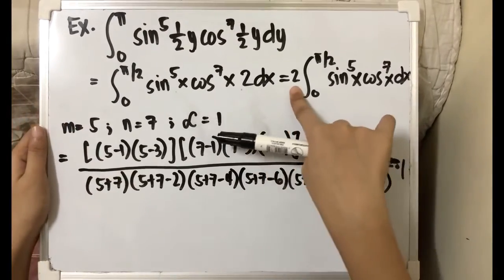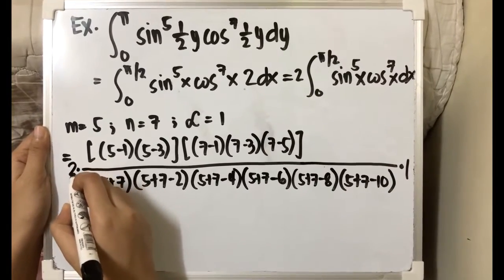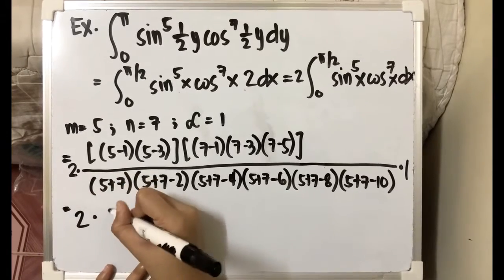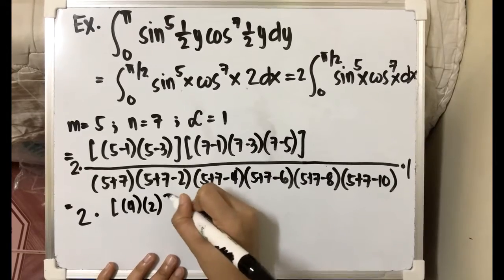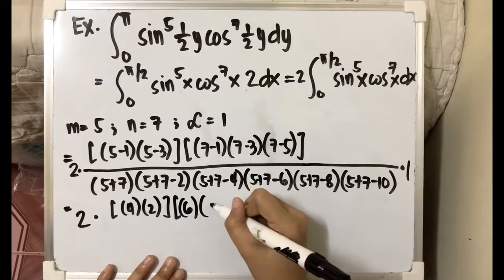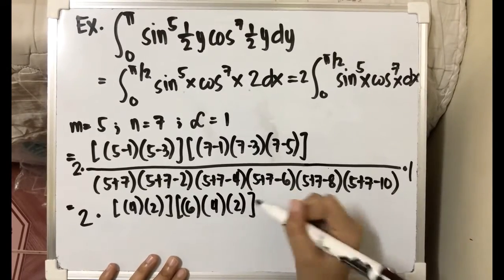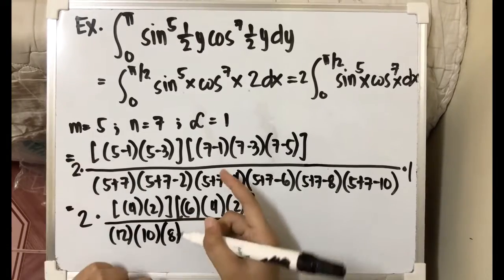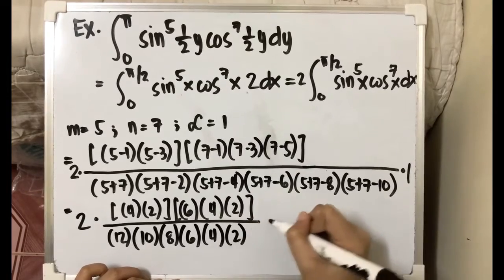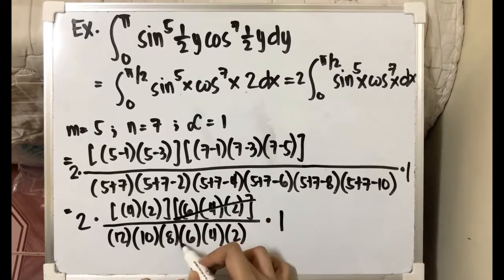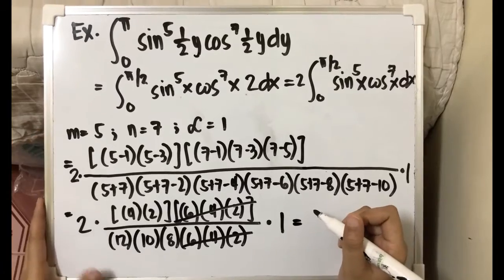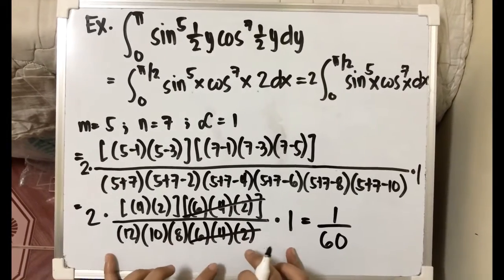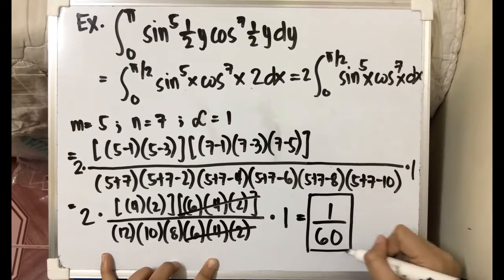So we have 2 times the numerator — which is 1 times 4 times 2 times 6 times 4 times 2 — all over 12 times 10 times 8 times 6 times 4 times 2, times lambda which is 1. We can cancel common factors, and if you calculate this, the result is equivalent to 1 over 60. So our final answer is 1 over 60.